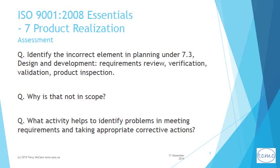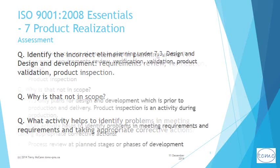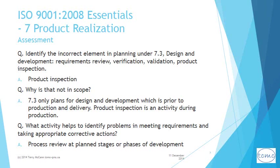Time for another self-assessment. Identify the incorrect element in planning under 7.3 Design and Development: requirements review, verification, validation, product inspection. Why is product inspection not in scope? What activity helps to identify problems in meeting requirements and taking appropriate corrective actions? Pause the presentation here, answer all the assessment questions, then proceed to the next slide to check your answers.